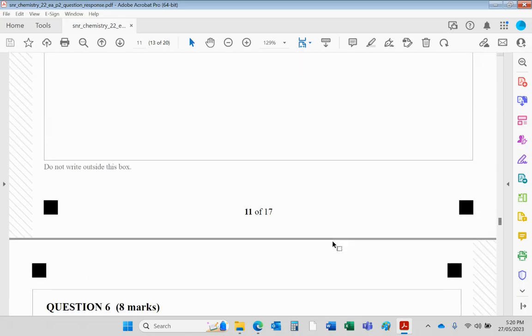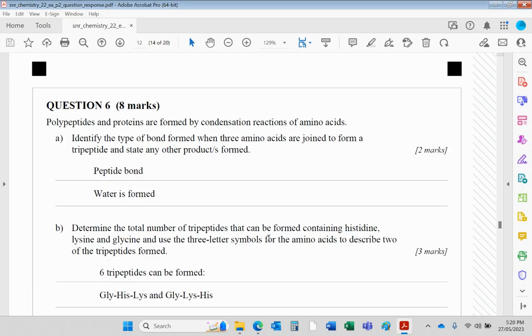Question 6: Polypeptides and proteins are formed by condensation reactions of amino acids. Identify the type of bond that's formed when three amino acids are joined to form a tripeptide and state any other products formed. Hopefully you know that when amino acids join together they form a peptide bond. I think they might accept amide bond as well there. It's a condensation reaction of course, so water is also produced.